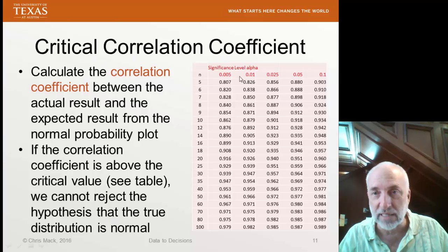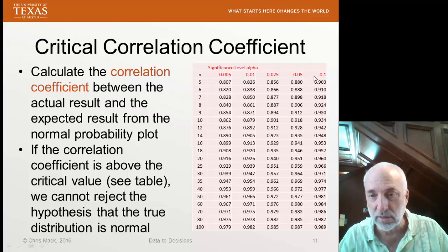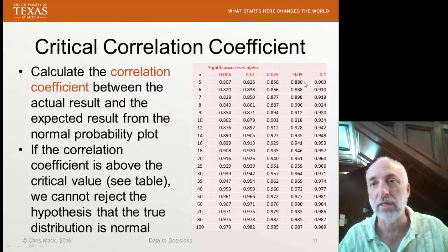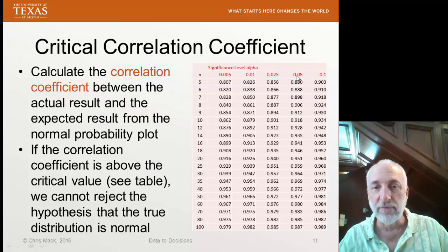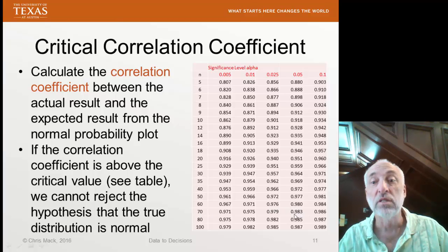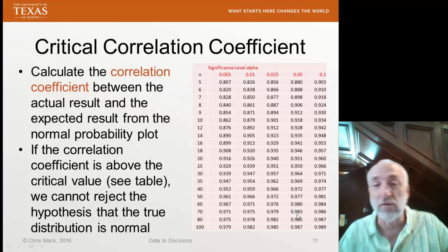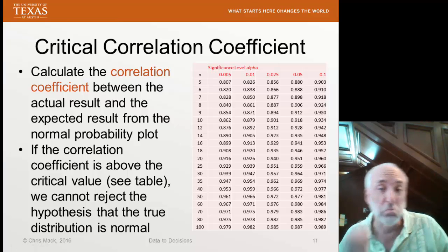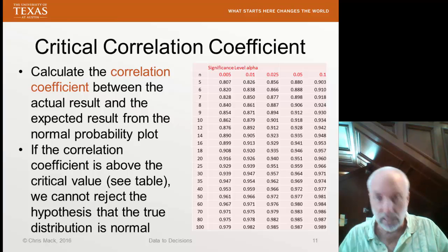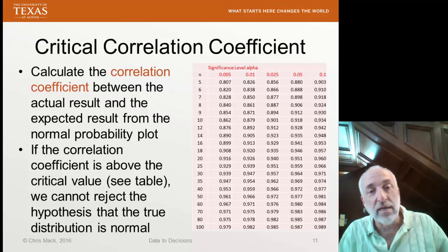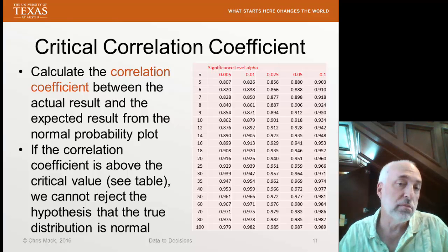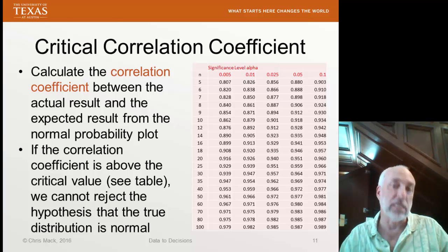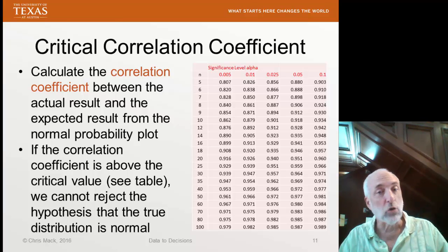So you supply a certain significance level, for example, 0.05 for a 95% confidence kind of assessment, alpha 0.05. Then for a given size of the data point, let's say you had 70 data points, you would expect to see a correlation coefficient of 0.983 or above if values truly were normal. If you see a correlation coefficient below that, that number of data points in this significance level that you're interested in,